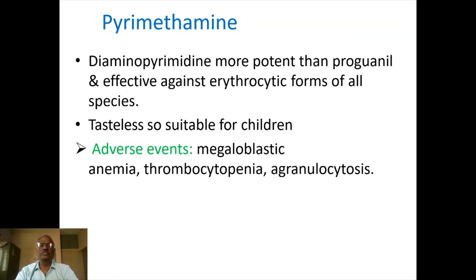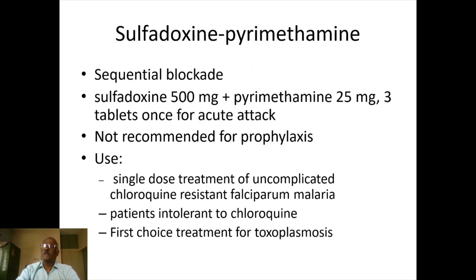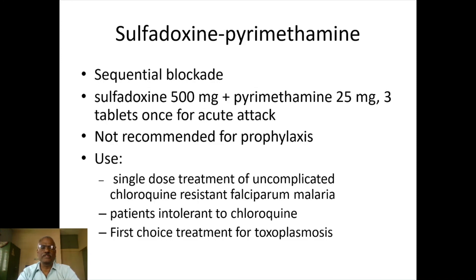Adverse drug effects of pyrimethamine include megaloblastic anemia, thrombocytopenia, and agranulocytosis. There is a combination called sulfadoxine and pyrimethamine. Sulfadoxine 500 mg combined with pyrimethamine 25 mg — three tablets once — is used for acute attacks to eradicate malaria. It is also recommended for prophylactic purposes and for treatment of uncomplicated chloroquine-resistant Plasmodium falciparum malaria. It is an alternative for patients who are intolerant to chloroquine, and is used for recurrent treatment and toxoplasmosis.